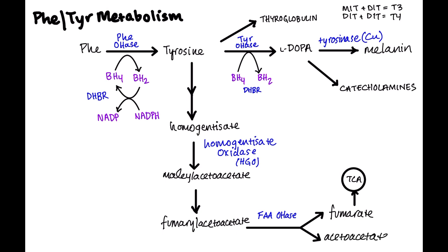There's an enzyme called fumarylacetoacetate hydroxylase (FAA hydroxylase) that cleaves fumarylacetoacetate into fumarate, which goes into the TCA cycle, and acetoacetate. That is the entire pathway. Pretty much every step can be a problem, and that's why this pathway is so heavily tested.